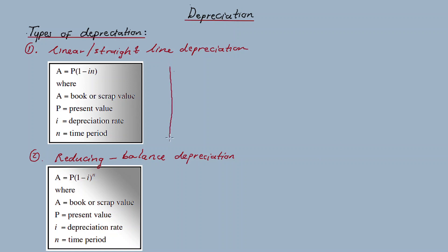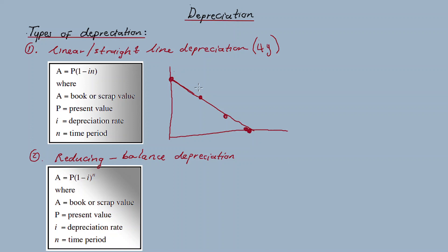Why do we call this straight line or linear depreciation? If, for example, like in the laptop example over a period of four years, for every single year you calculate the depreciation value — the scrap value or book value — and plot it on a graph, up until the point where the value for that laptop is zero, it forms a straight line. If you plot every instant of the depreciation period, you get a straight line where the x-axis represents time in years and the y-axis represents the value in rands.